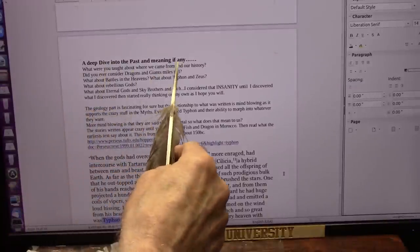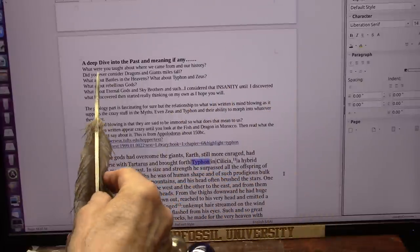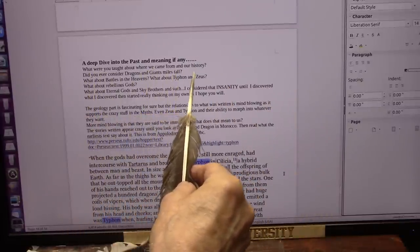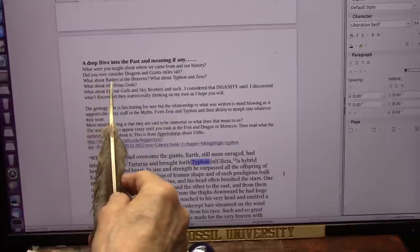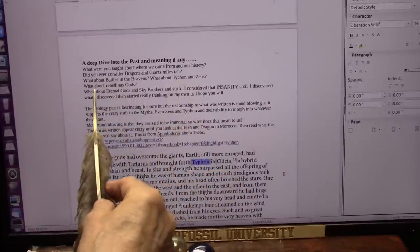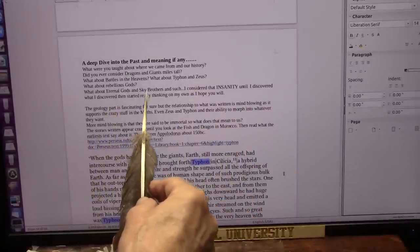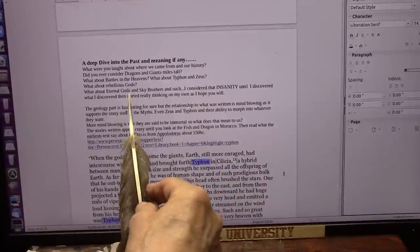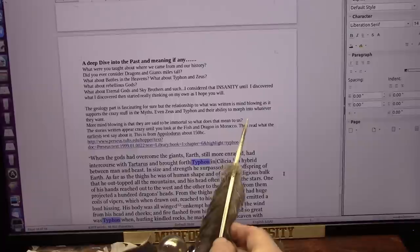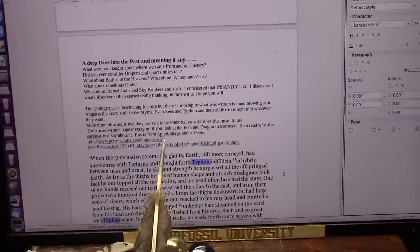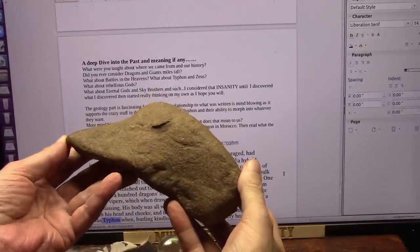Let's take a deep dive into the past and the meaning, if there is any meaning to it. Maybe those giants and dragons always just have no meaning, but I think there was. What were you taught about where we came from in our history? Did you ever consider there were gigantic dragons and giants miles tall? What about the battles that were in the heavens? What about Typhon and Zeus? What about the rebellious gods that came to Earth and ruined everything? What about the eternal gods and the Sky Brothers? All of that stuff indigenous people talk about. I always considered it insanity myself, absolutely, until I discovered mud fossils. And I did discover them ten years ago, a little more.